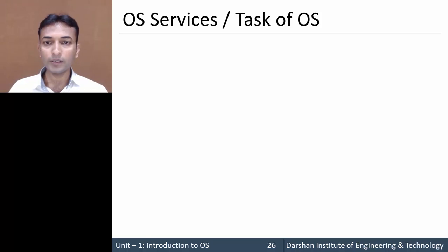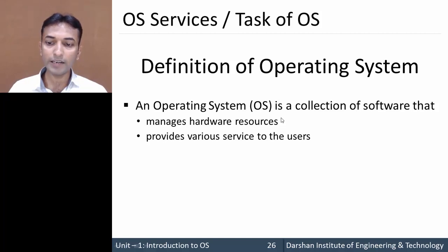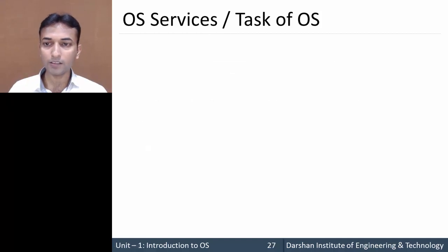Now let us move to the different types of services provided by the operating system, also called OS services or tasks of the operating system. Before starting this topic, let us revise the definition: the operating system is a collection of software that manages hardware resources and provides various services to the user. In this video we will see which types of services the operating system provides.